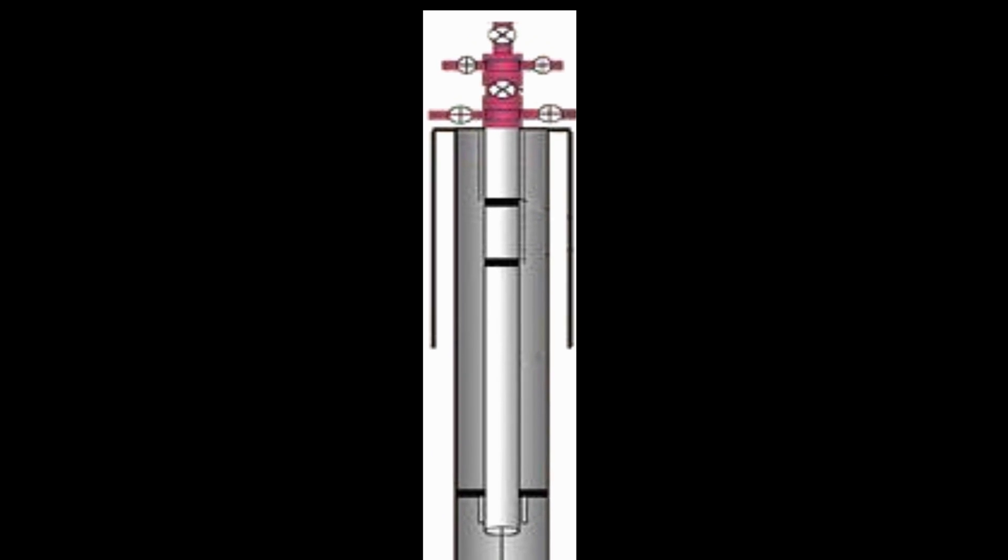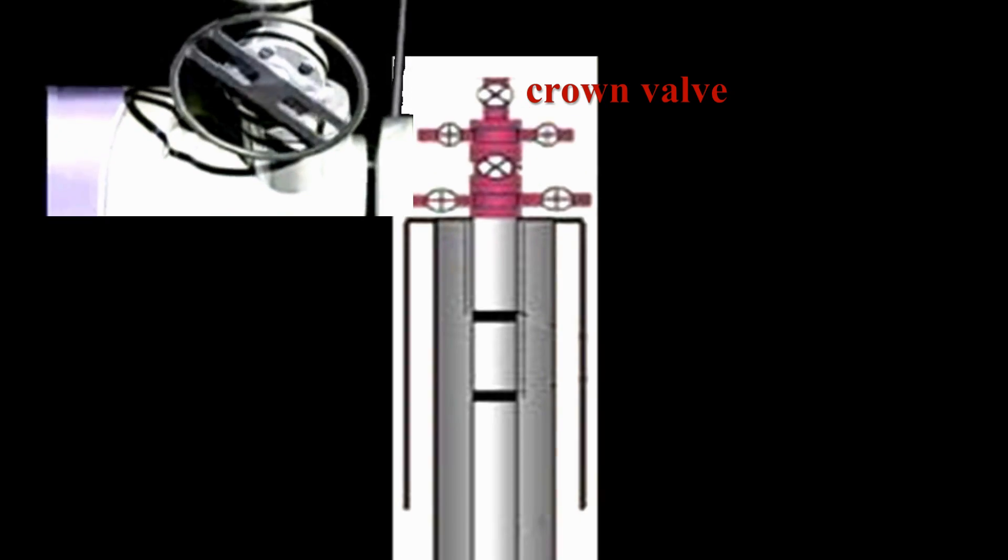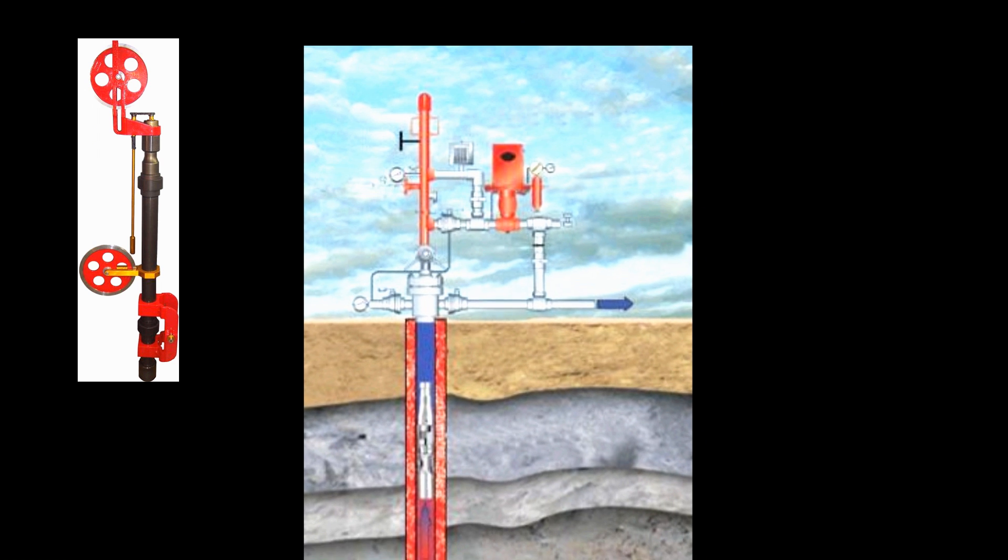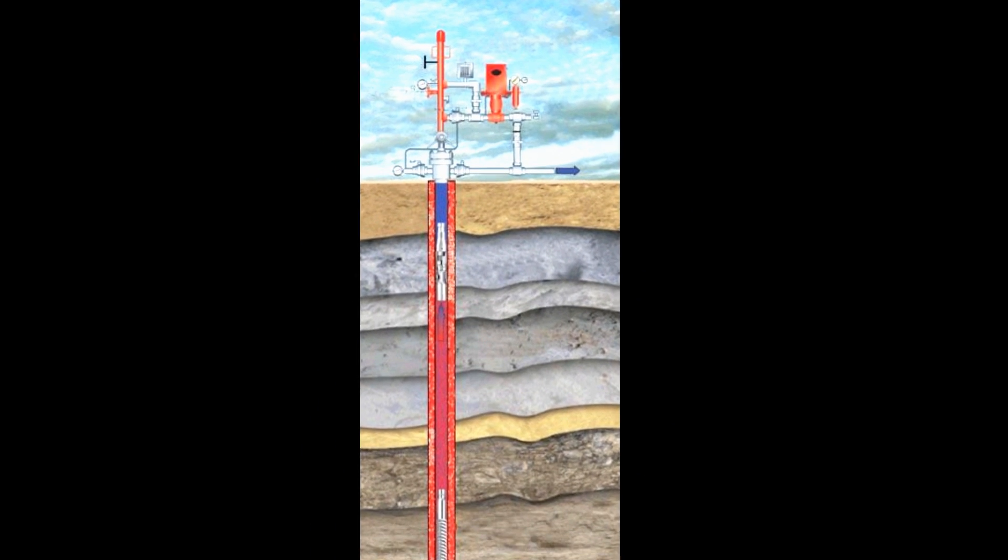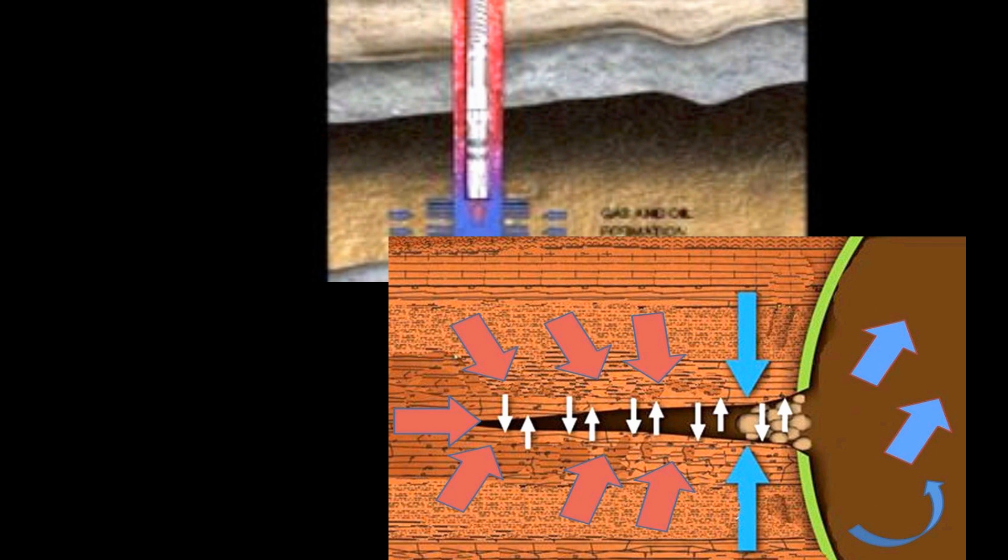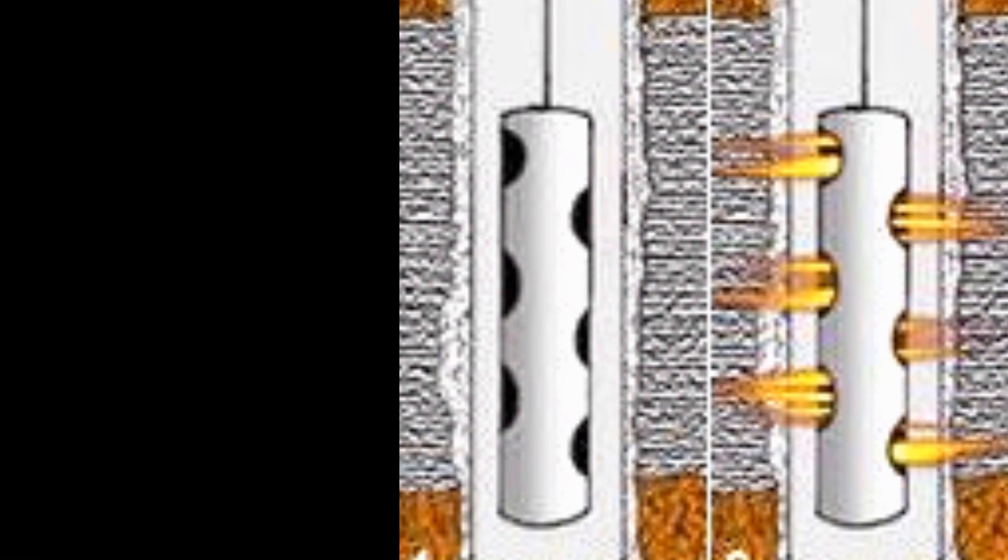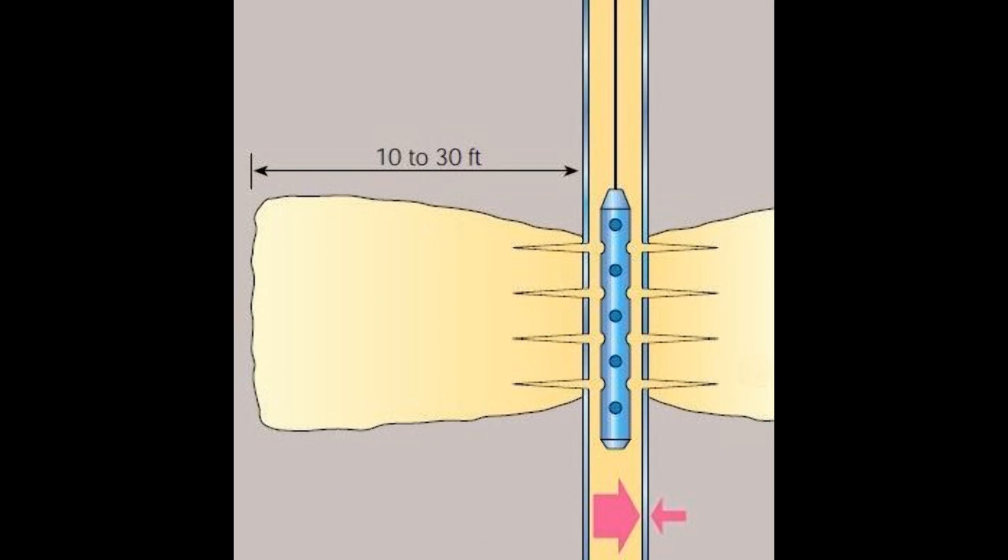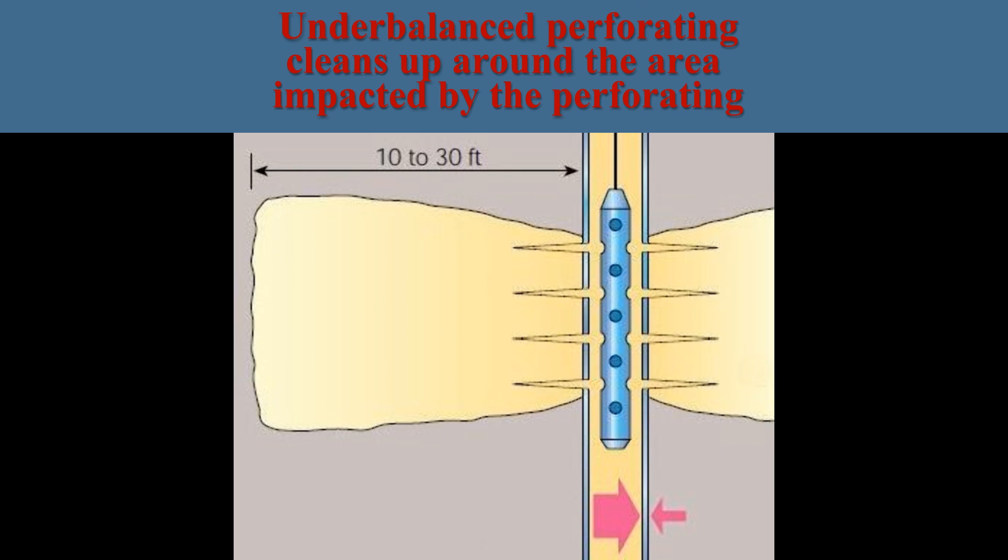In running wireline through tubing perforating, the crown valve in the lubricator on a tree is opened. The perforating gun is then run into the well and fired. The stuffing box, sitting at the top of the lubricator, holds the pressure buildup in the formation to prevent blowouts. This pressure buildup in the formation causes the formation fluids to rush out into the wellbore, flushing out the jet-charged debris along with the damaged formation rock. Under-balanced perforating, in other words, immediately cleans up around the area impacted by the perforating, which should then enhance flow rates when production begins.